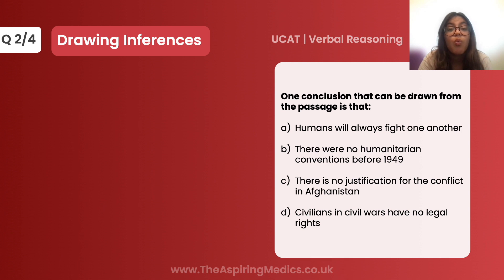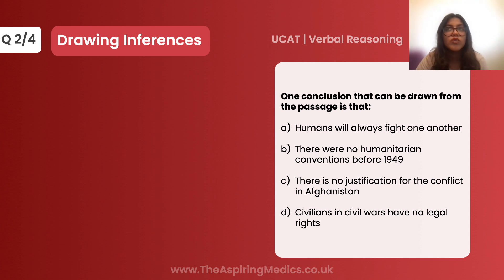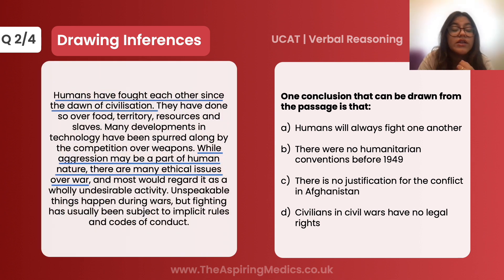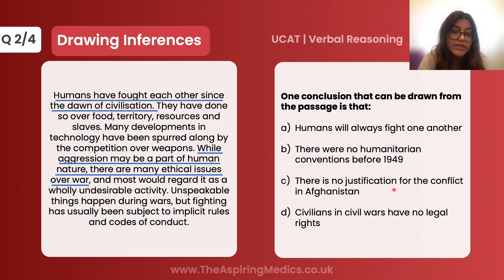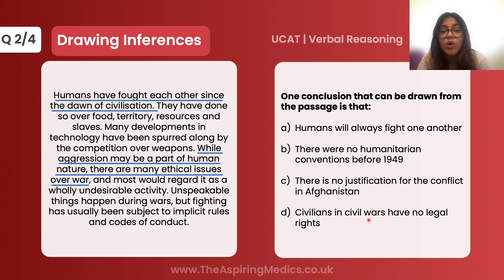The next question is: one conclusion that can be drawn from the passage is that — a drawing inferences type question asking for the main conclusion. Let's go through the options. Option A: humans will always fight one another — that is definitely something the passage has talked about. Option B: there were no humanitarian conventions before 1949 — not mentioned at all. Option C: there is no justification for the conflict in Afghanistan — not mentioned. Option D: civilians in civil wars have no legal rights — obviously not true. So the correct answer is option A.